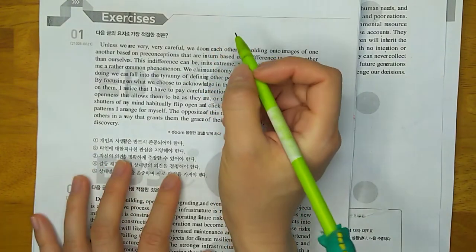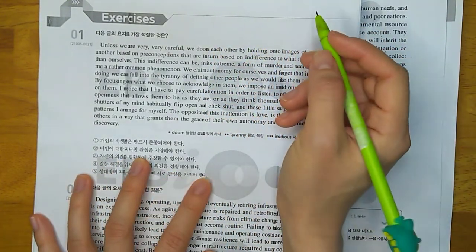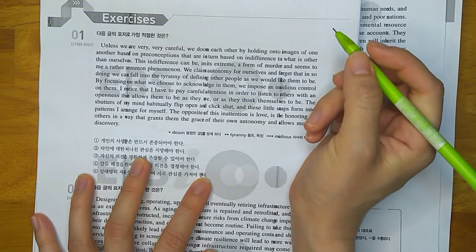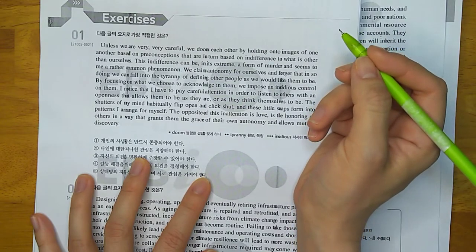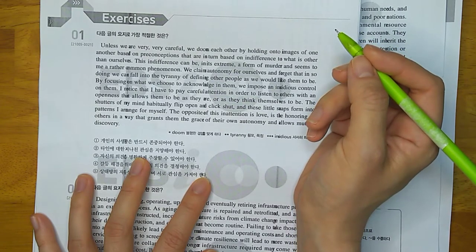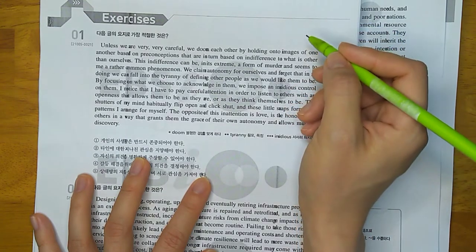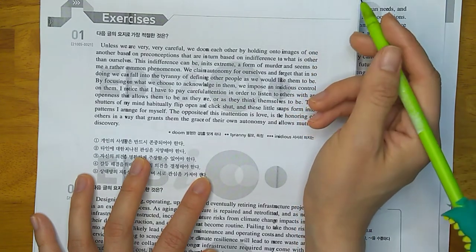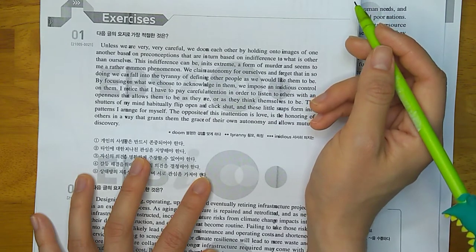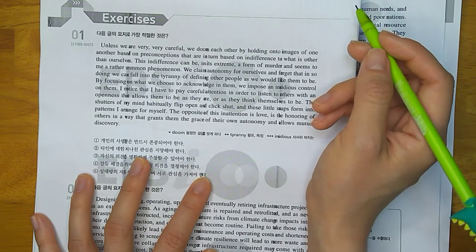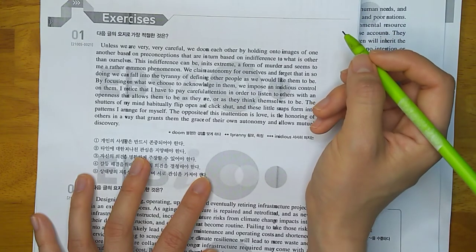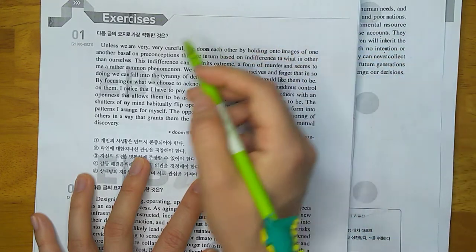Unless we are very, very careful, we doom each other by holding onto images of one another based on preconceptions that are in turn based on indifference to what is other than ourselves. This indifference can be, in its extreme, a form of murder and seems to me a rather common phenomenon.